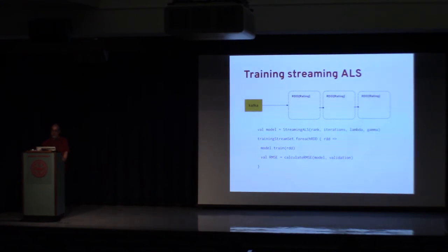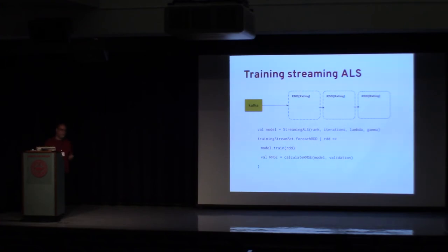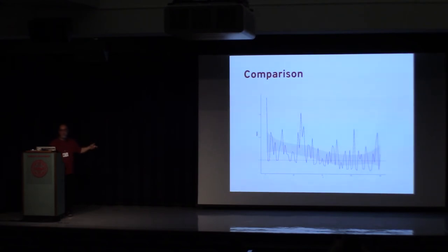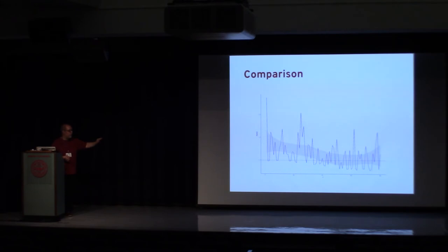Here are the results. The horizontal dashed line is the RMSE for the batch version; the blue squiggly line is the RMSE for the streaming version. In the beginning, the streaming version doesn't have much data so it's all over the place. But as time goes by, it converges to a value in the same region as the batch version. In the end, both batch and streaming process the same amount of data, so it's a reasonable result.